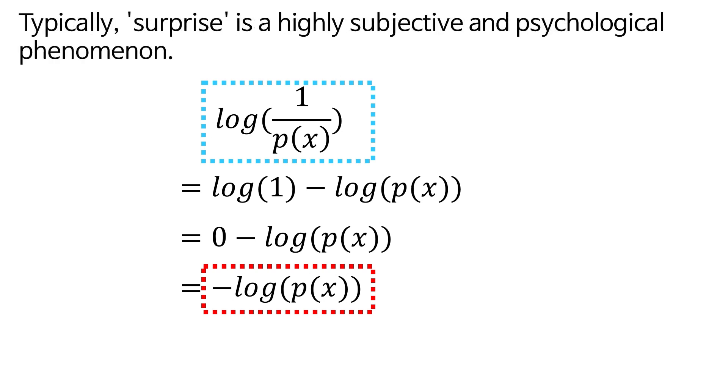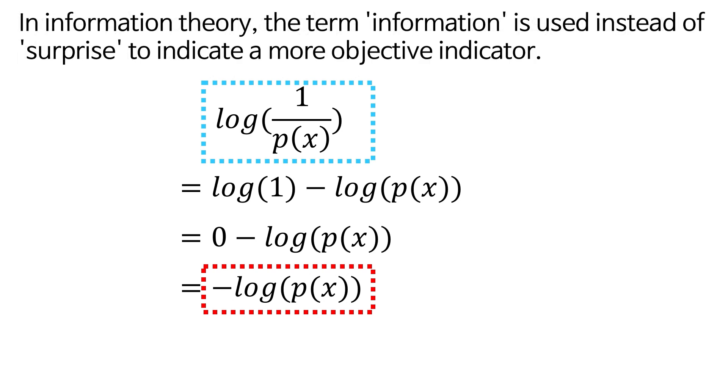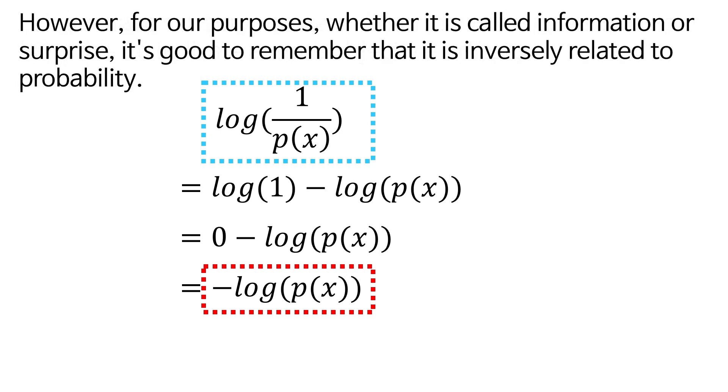Typically, surprise is a highly subjective and psychological phenomenon. In information theory, the term information is used instead of surprise to indicate a more objective indicator. However, for our purposes, whether it is called information or surprise, it's good to remember that it is inversely related to probability.